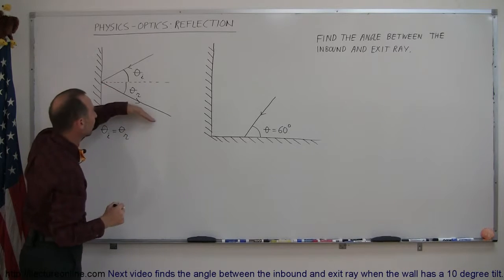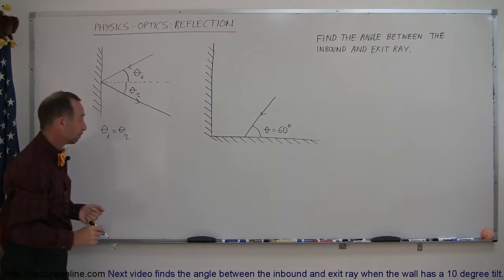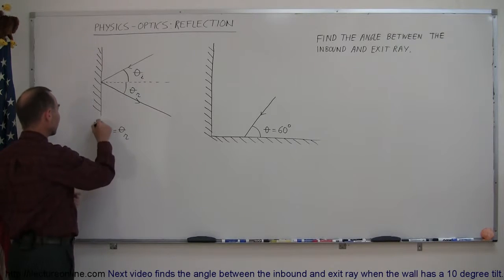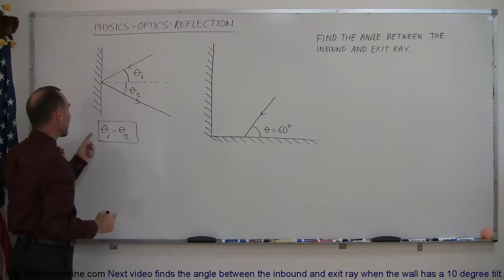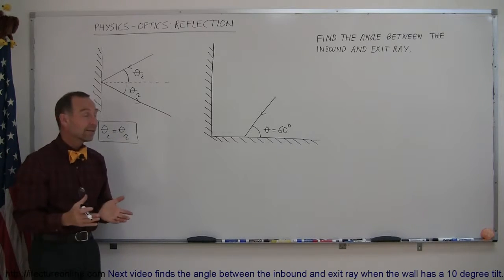This is the angle between the exiting ray and the normal. So these two angles are always the same any time there's a reflection, and so the entire equation comes down to the angle of incidence equals the angle of reflection. Now that seemed easy, and it is.